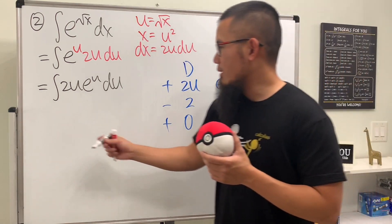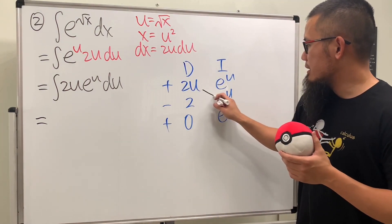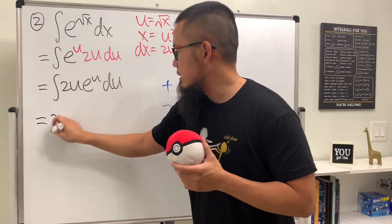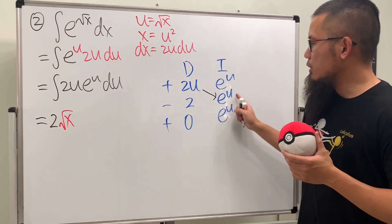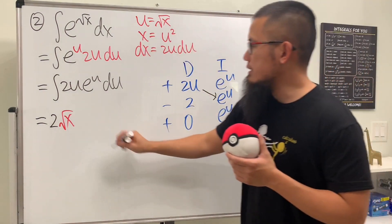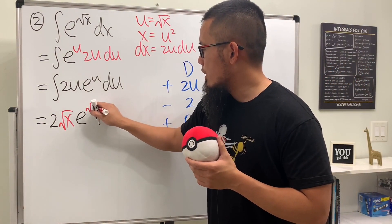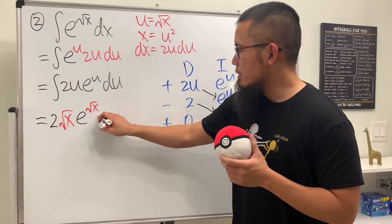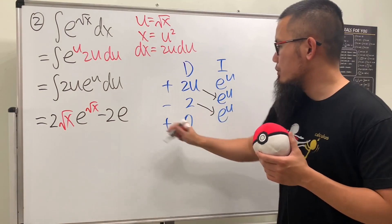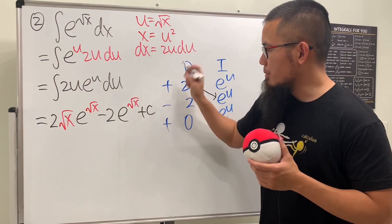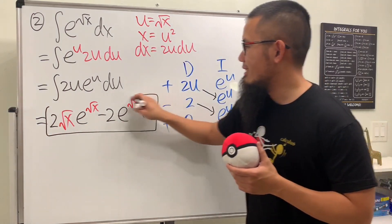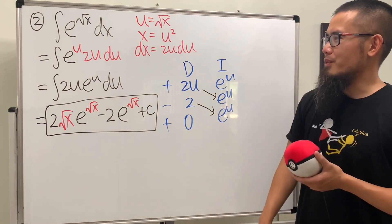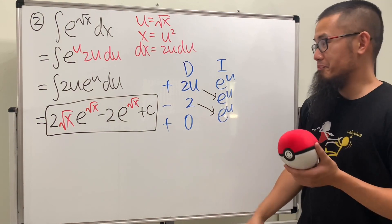So ladies and gentlemen, what do we have here? u is square root of x, so we will have 2 square root of x, and then e to the u which is again e to the square root of x. Then this times that gives minus 2 e to the square root of x. Put a plus c and we're done. This is definitely easier than the first question.